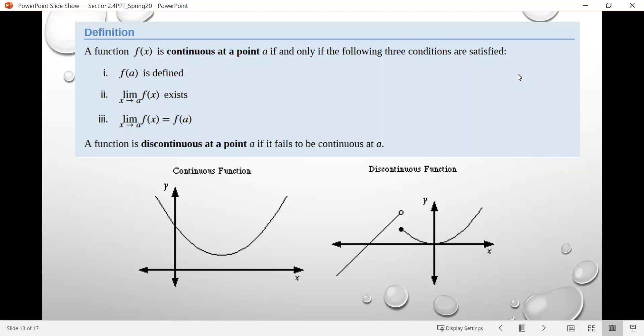Before we dig into our new stuff, just want to remind ourselves of what it means for a function to be continuous at a point. Remember we have these three criteria we have to check if we're trying to determine whether a function is continuous at a particular point a, where a is an input value. The first one is that f of a is defined, so a would actually be in the domain of our function.